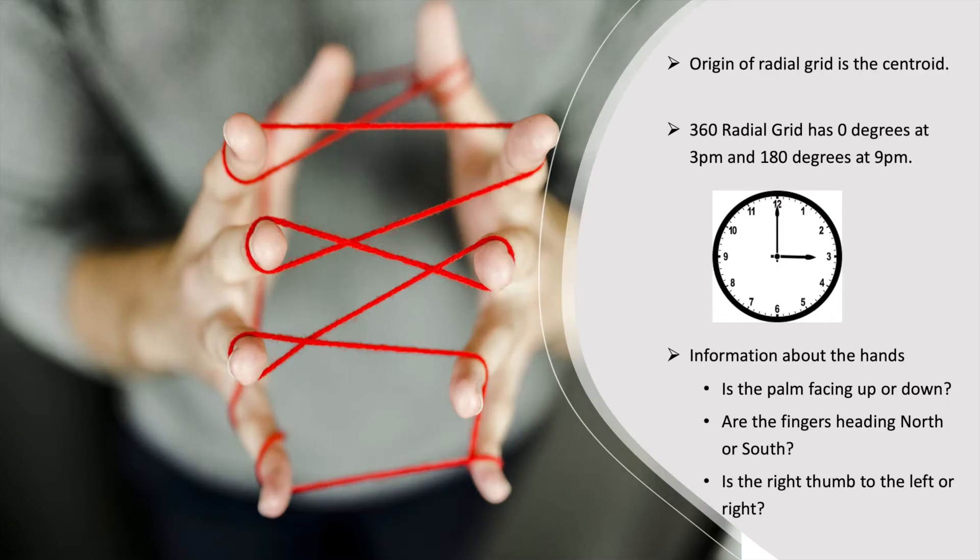Here are some of the things to note. When we overlay the radial grid on the outline of a handshape, the origin is the centroid, and the radial grid has 0 degrees at the 3pm location and 180 degrees at the 9pm location. This 3pm to 9pm axis is very important.